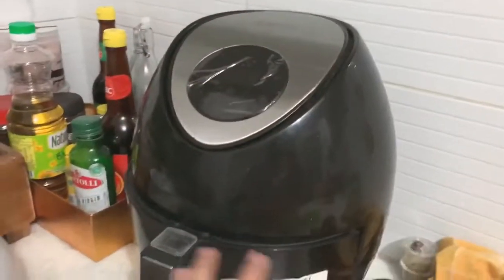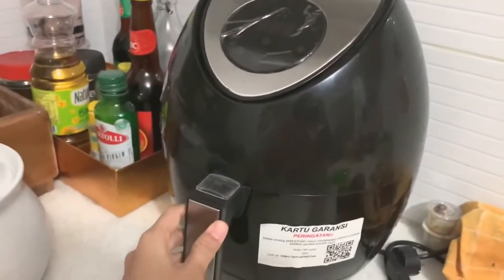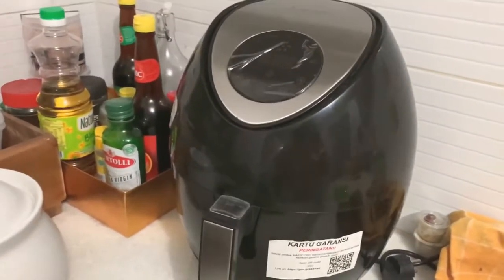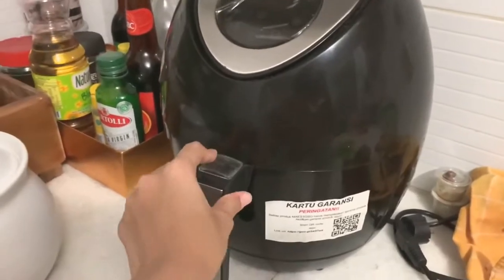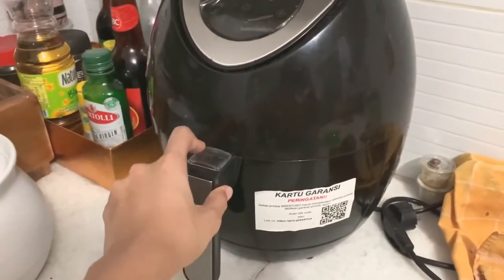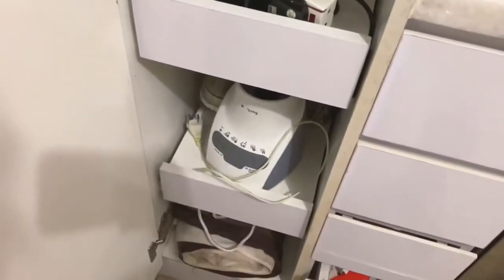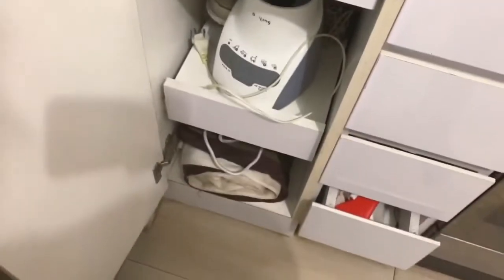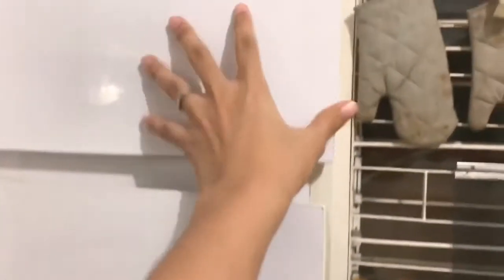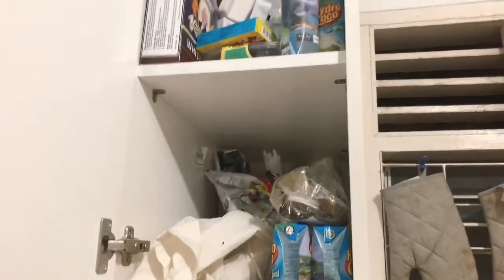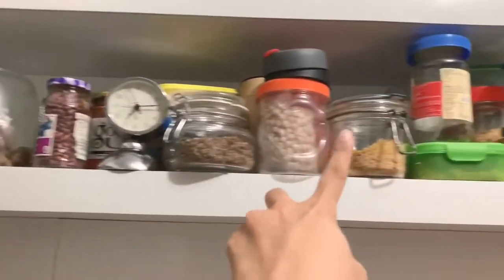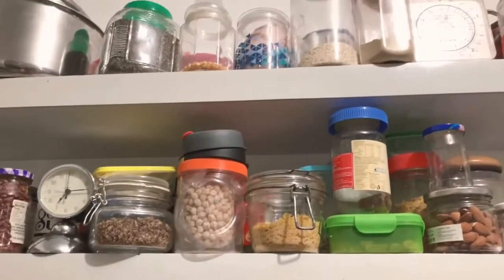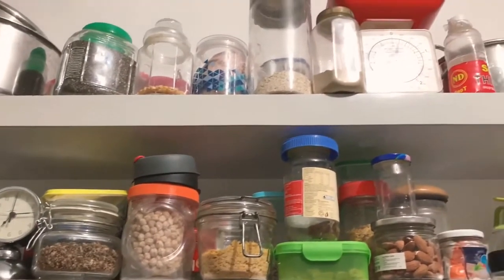We need to think about our kitchen appliances. This is our air fryer that we use almost on a daily basis, a toaster, the blender, and then some of our pantry stuff. And then this is like our food collection in jars.